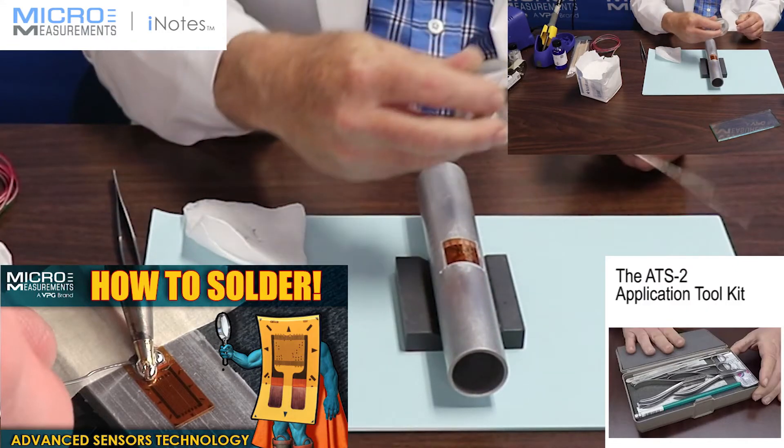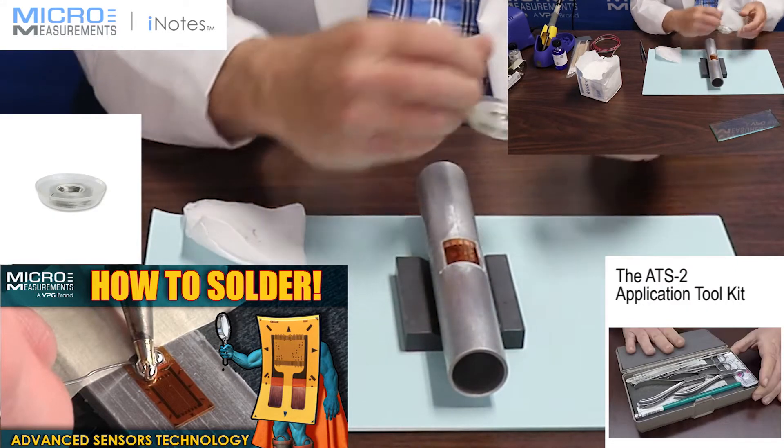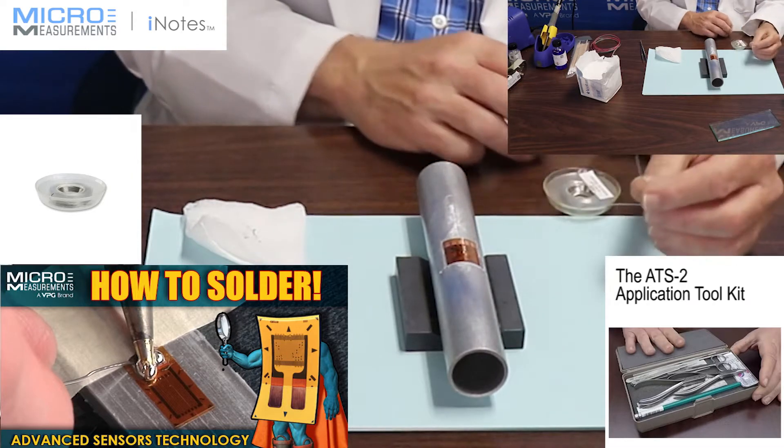I'm going to be using our 361A20R solder. It's a 63-37-10 lead solder with a little flux core in the middle.